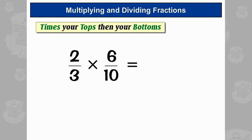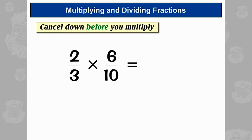Sometimes you'll be able to cancel down. It's always easier to cancel down before you multiply your tops and your bottoms. And you can cancel down anything on the top with anything on the bottom.